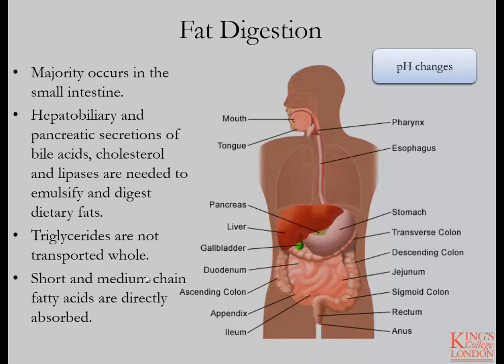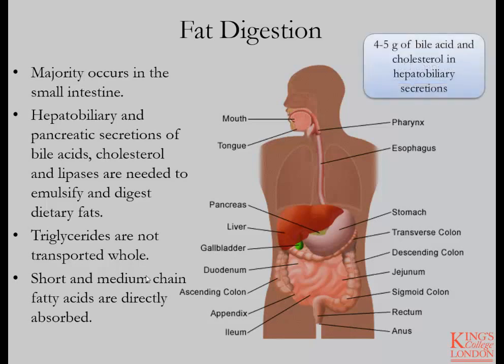Also important in the digestion of fats is the change in pH from when the food enters the mouth to when it hits the stomach, where you get a substantial drop in pH. The churning motion of the stomach produces an acidic chyme, which aids in the emulsification of fats. Hepatobiliary and pancreatic secretions of bile acids, cholesterol, and lipases are needed to emulsify and digest the fats.